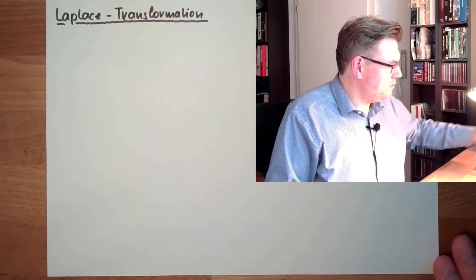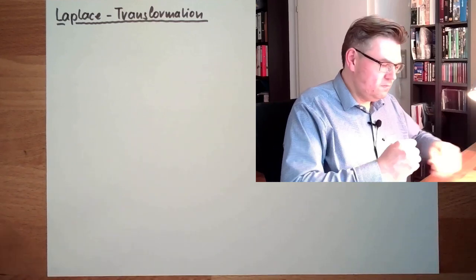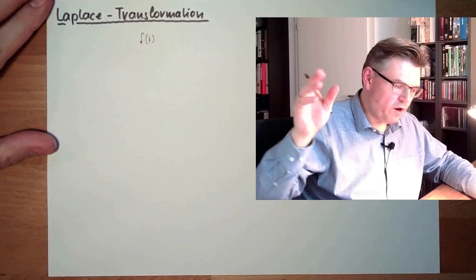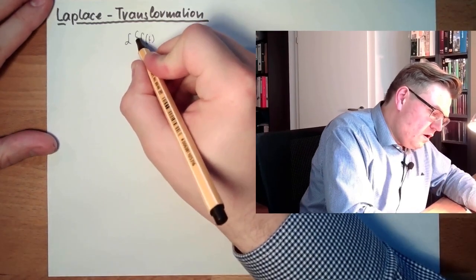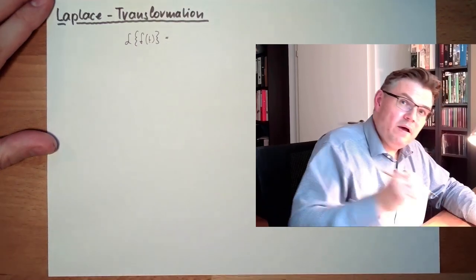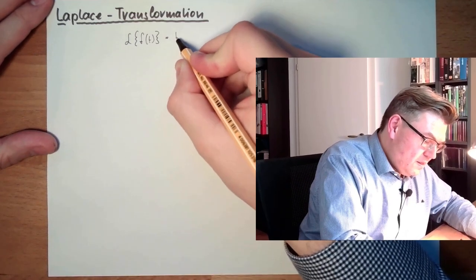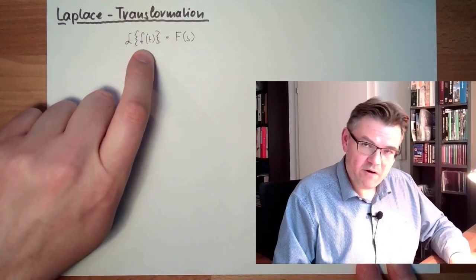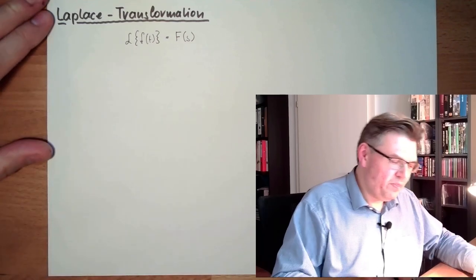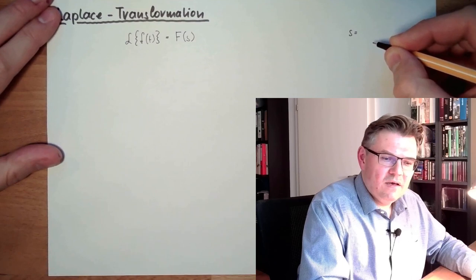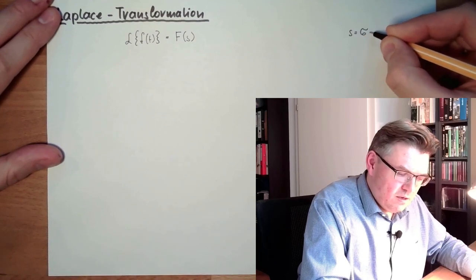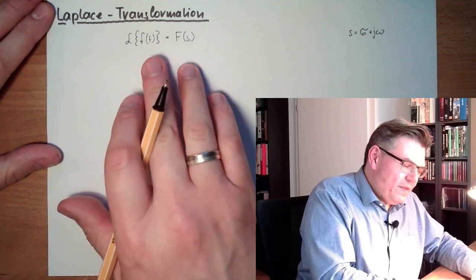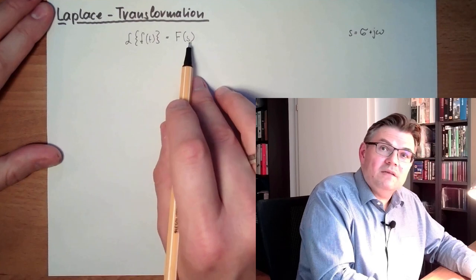What is the Laplace transformation? Let's say we have some function in time — this function has some form, whatever. If we do the Laplace transformation of this function, we end up at a different function. This time we use capital letters with a different variable: no longer the time variable, but the so-called picture variable S. This S is a complex variable — sigma plus j omega. This is the time area, and this is the so-called Laplace or picture area.